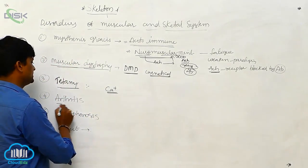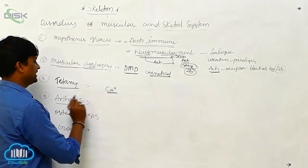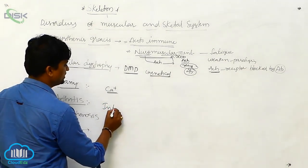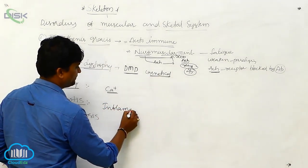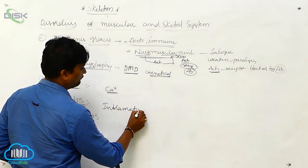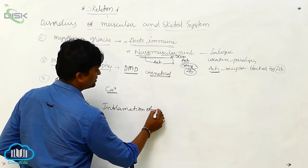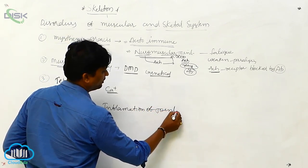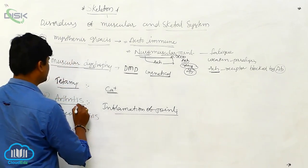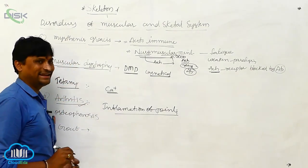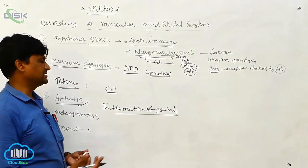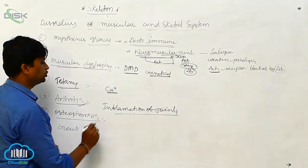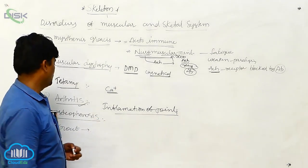The next disorder is arthritis, which means inflammation of the joints. Wherever inflammation is expressed at a joint, we call it arthritis.